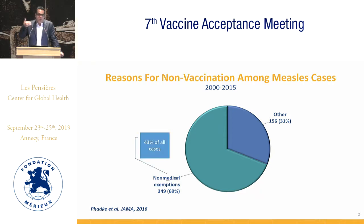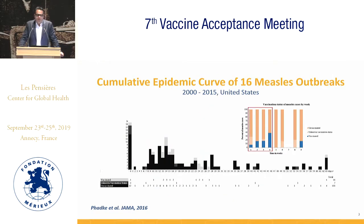And there were 43 percent of the total group of cases when you added those too young to be vaccinated as well. But there is also a contribution of vaccine refusal as measured by vaccine exemptions in the US in terms of dynamics of some of these outbreaks.